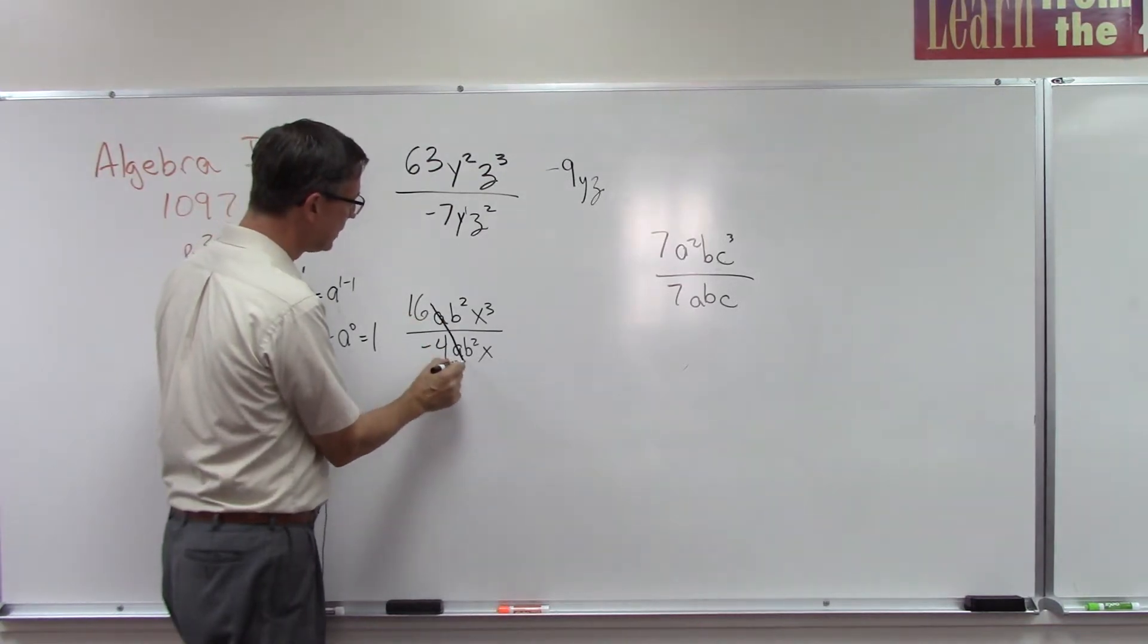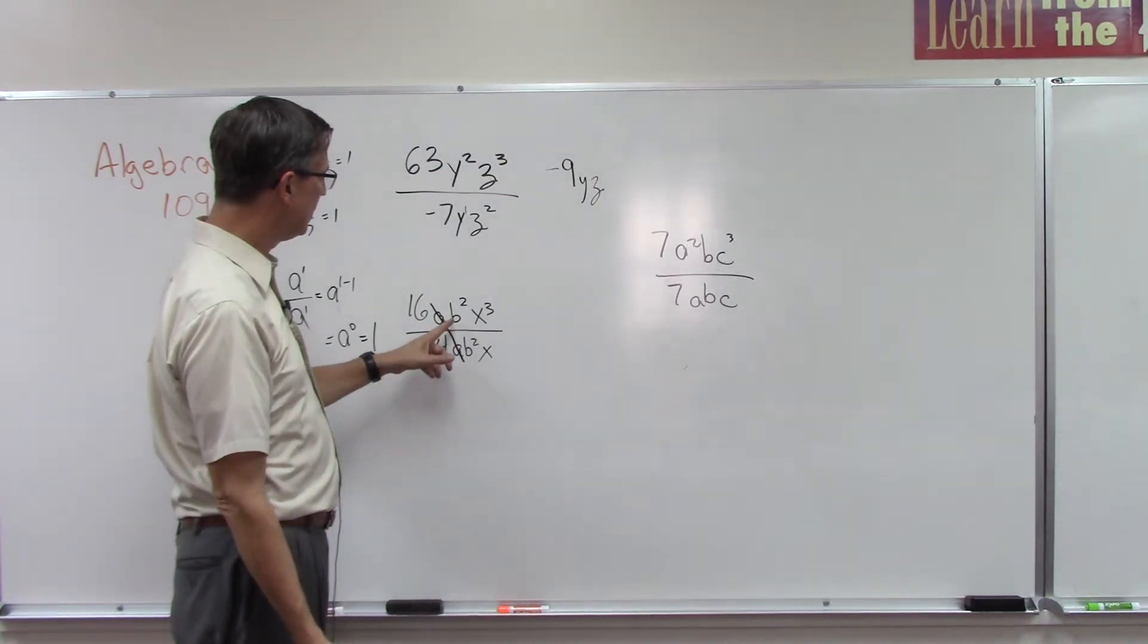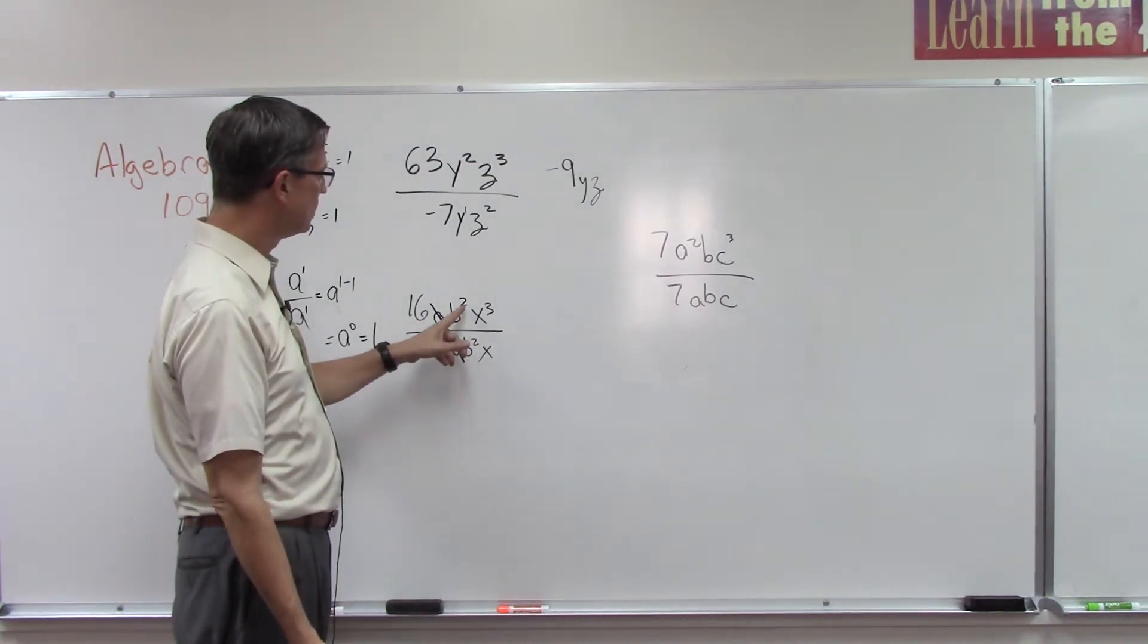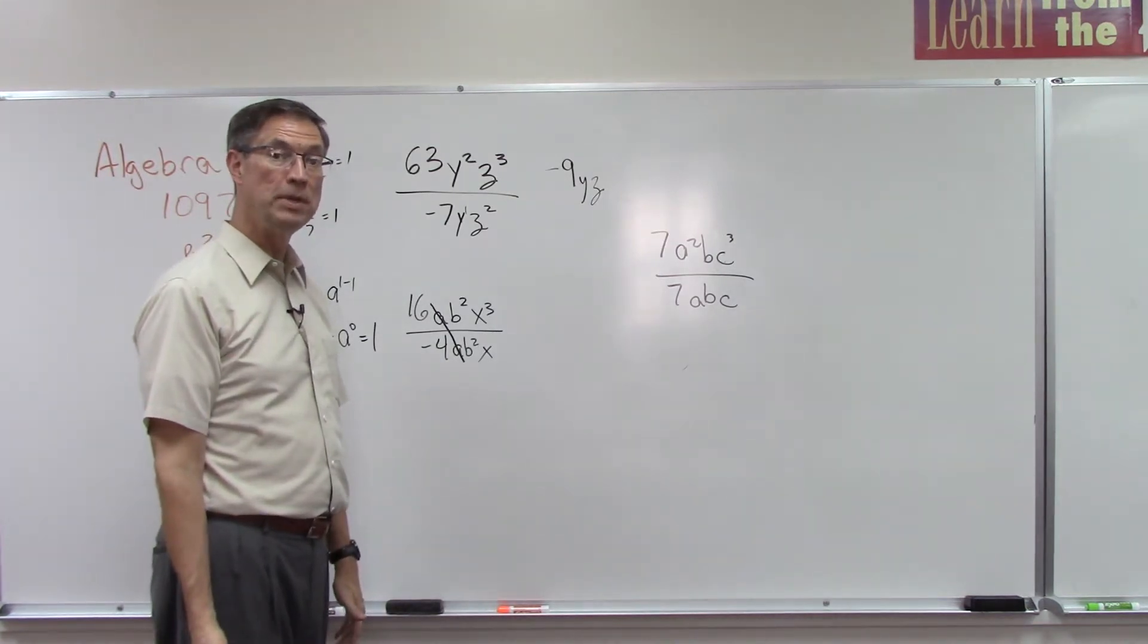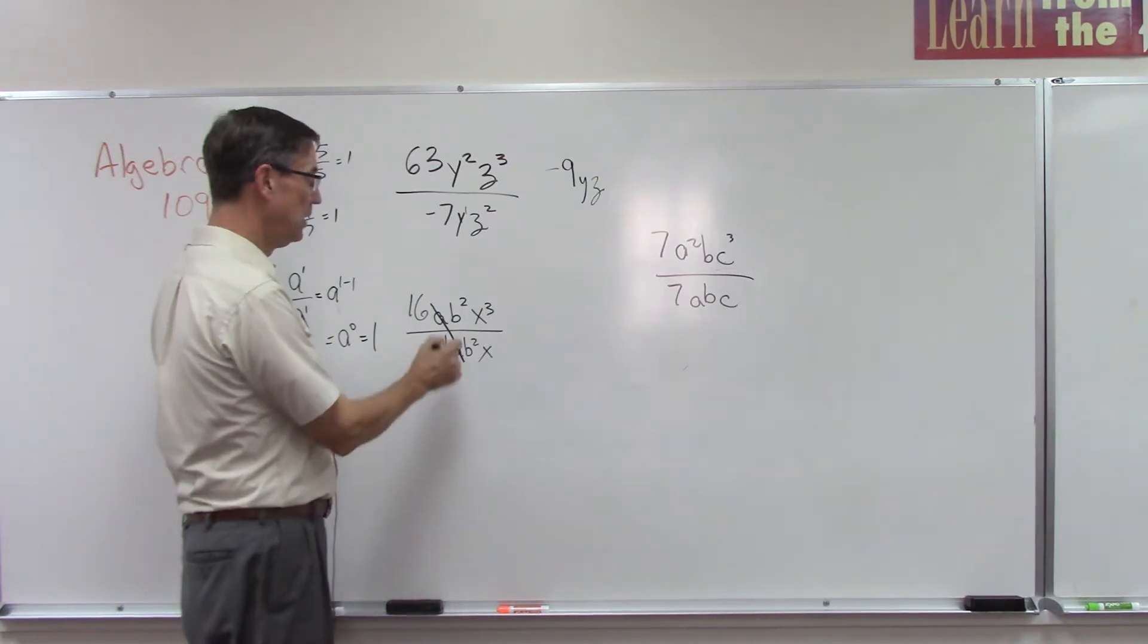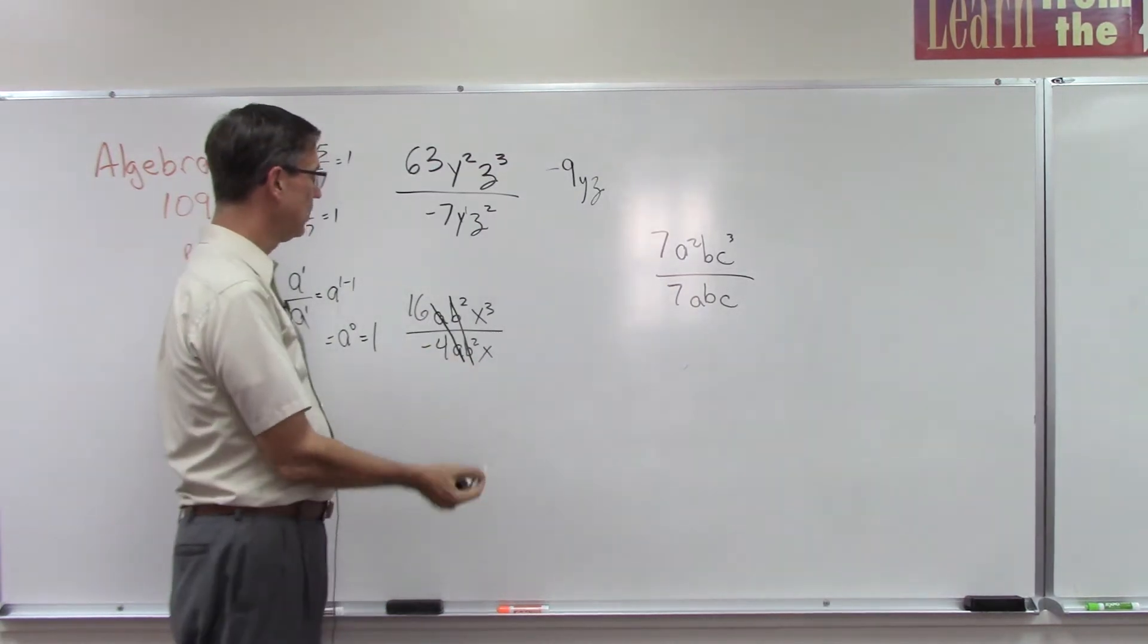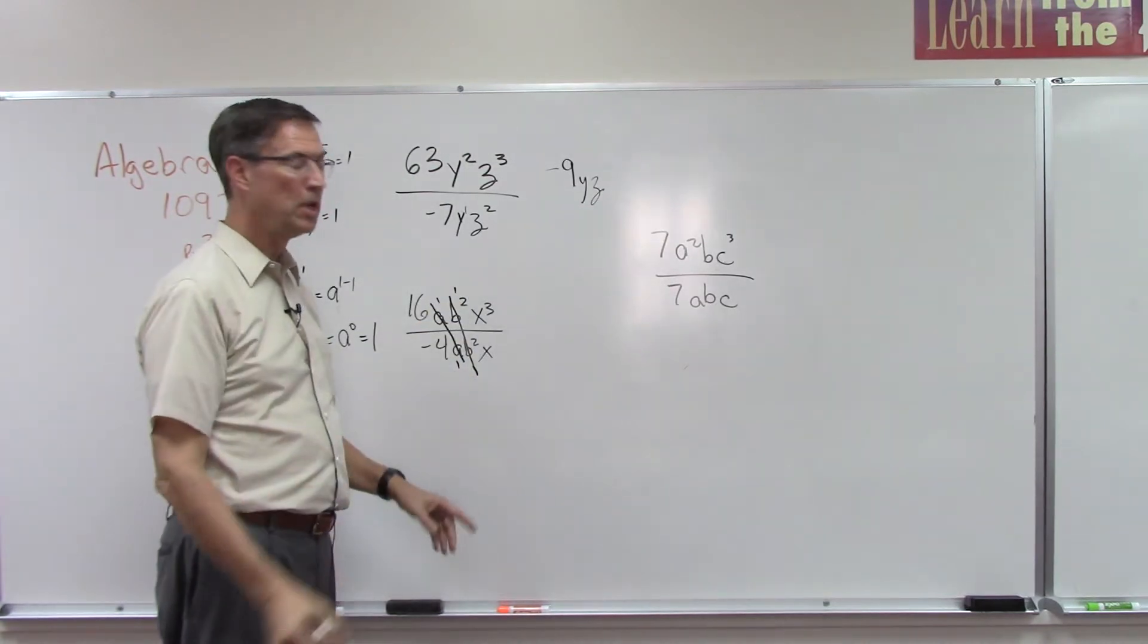Okay, so another way of thinking about that in this case is to think, okay, this a over this a becomes 1, it just cancels out. All right, look, we have the same thing here: b² over b². Because the 2 minus 2 becomes 0, b⁰ - anything to the 0 power is 1, so it's like that cancels out. It just becomes, you know, 1 over 1.